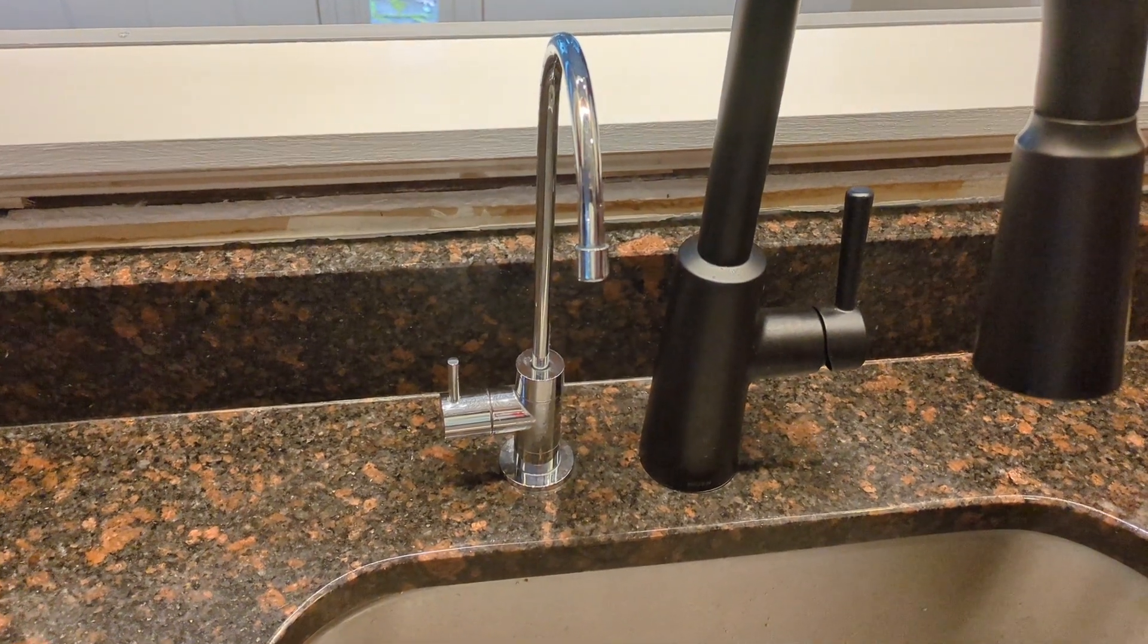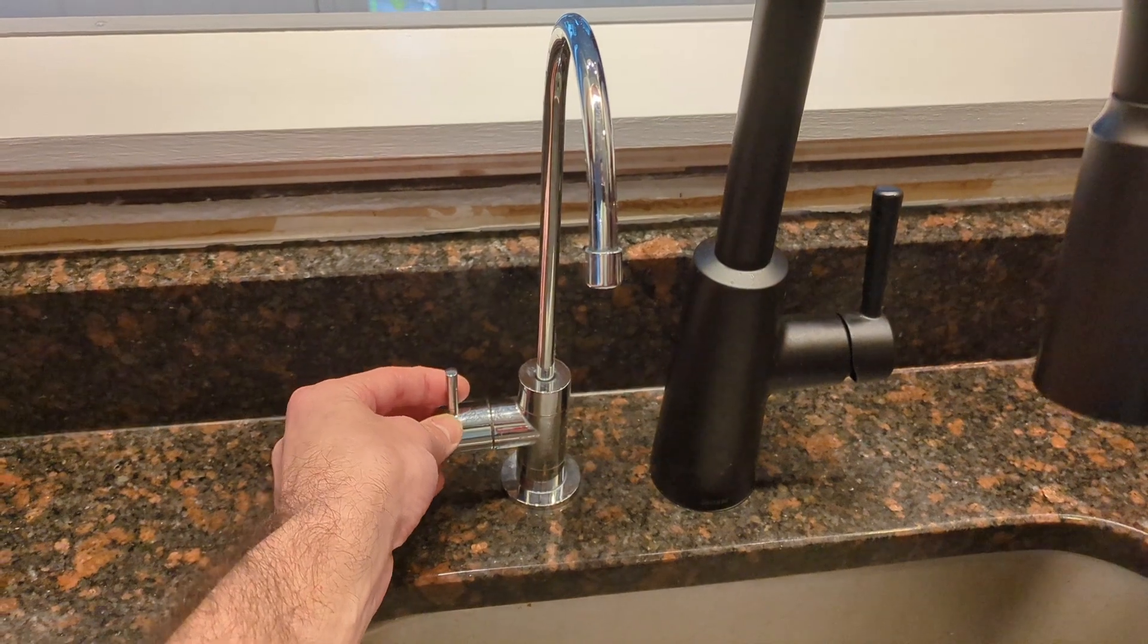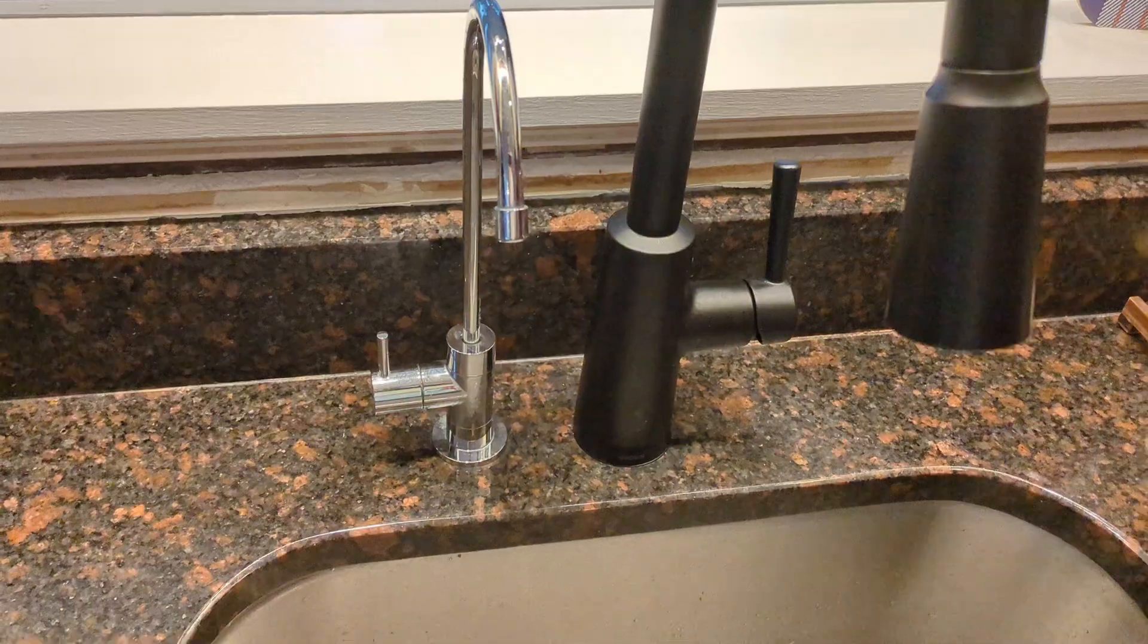First for a general overview, the one that I ordered came with this chrome beverage faucet and that's standard. You can get different colors or use your own if you get the one that matches your kitchen faucet.